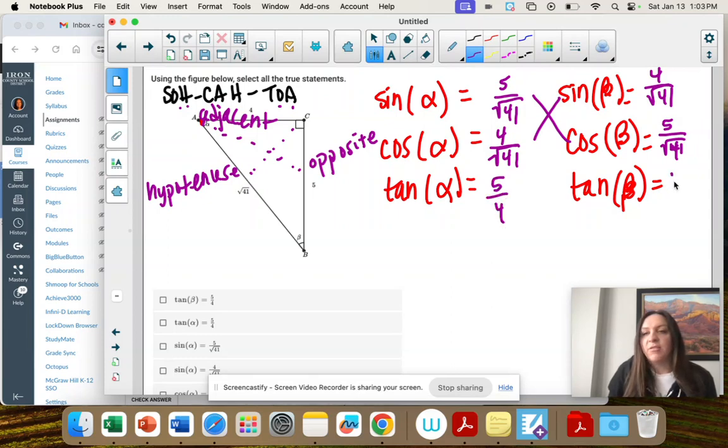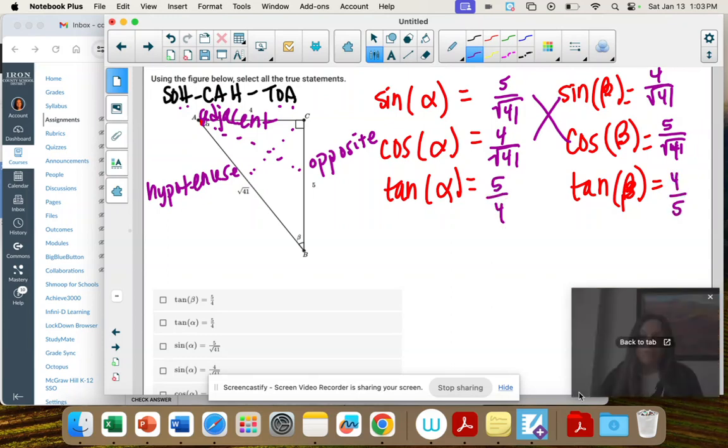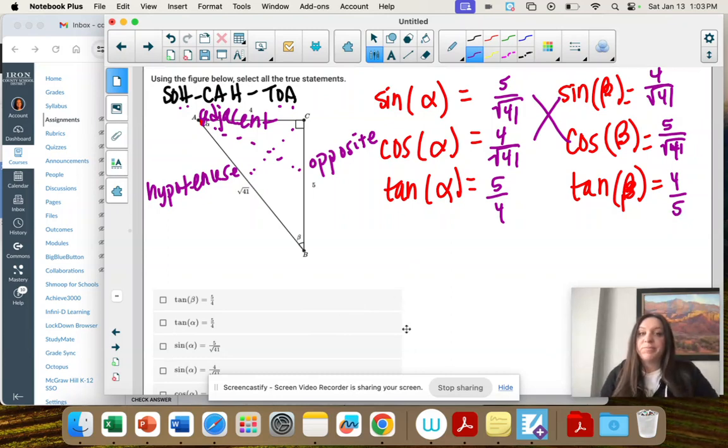Tangent is opposite over adjacent, so 5 over 4. The reciprocal happens when you switch reference angles. Now we just have to match what works. Tangent of beta is 4 over 5. Tangent of alpha is 5 over 4. That's right.